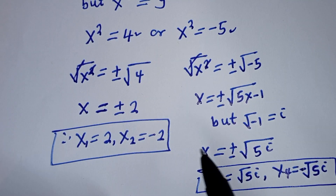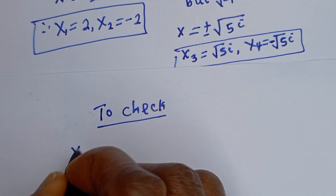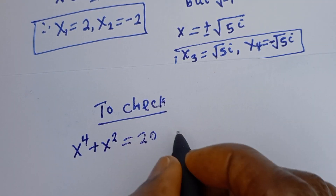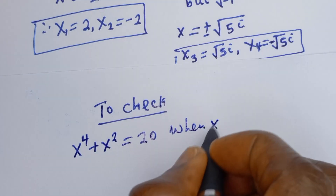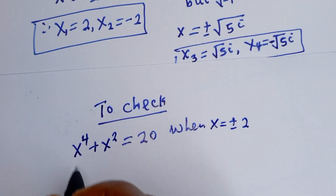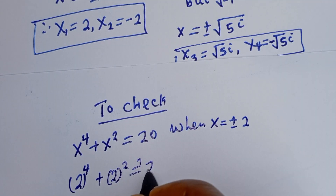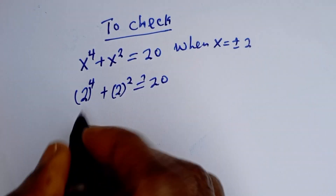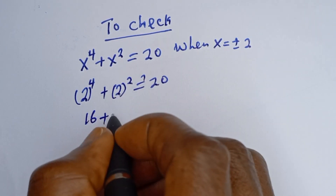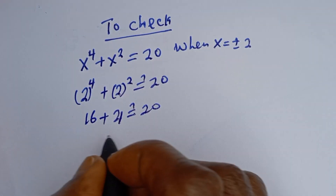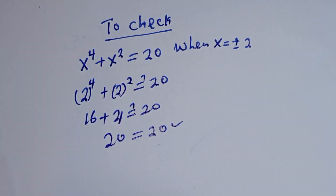We can check to confirm if this answer is right. To check, we use the given equation: s to the power of 4 plus s squared is equal to 20. When s is equal to plus or minus 2, then 2 to the power of 4 plus 2 squared must equal 20. Now, 2 raised to the power of 4 is 16, plus 2 squared which is 4, giving 16 plus 4 equals 20, which is true.